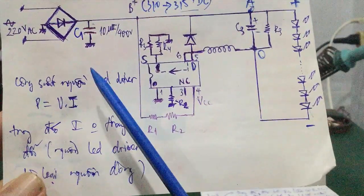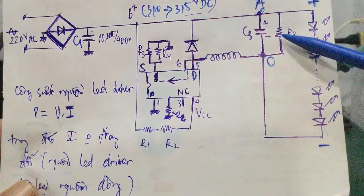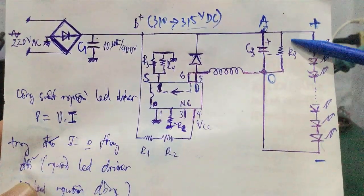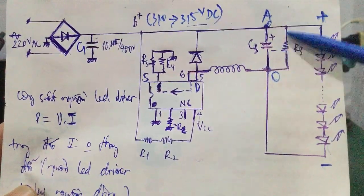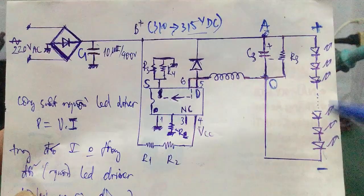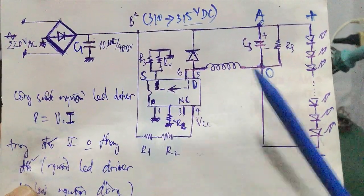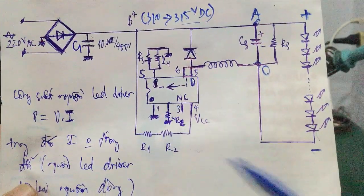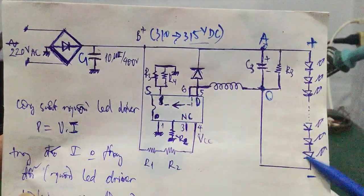Trường hợp giảm U là khi các bạn muốn giảm công suất để bảo vệ chip LED. Vì trong quá trình hoạt động, cường độ dòng điện và điện áp làm tăng công suất của chip LED, chip LED sẽ dễ bị chết, bị nóng. Giảm U để bảo vệ chip LED, đồng thời giảm công suất tiêu thụ của nguồn LED driver. Giảm được khoảng mười mấy volt cũng đủ để chip LED hoạt động bền bỉ hơn.